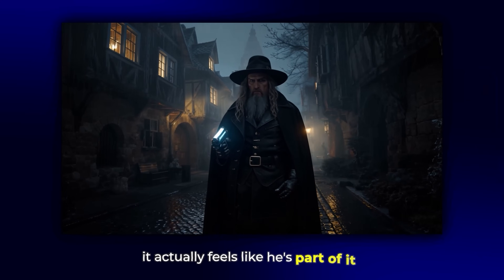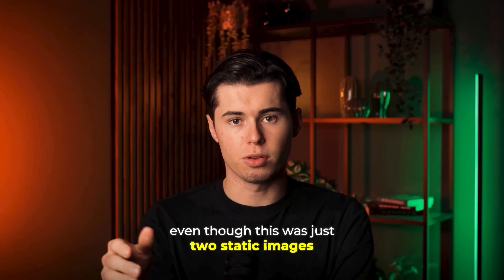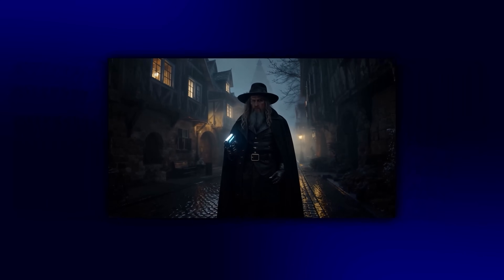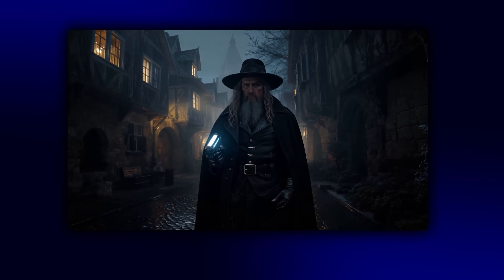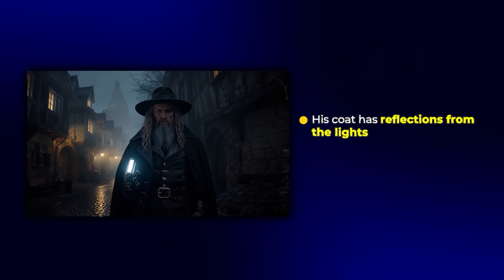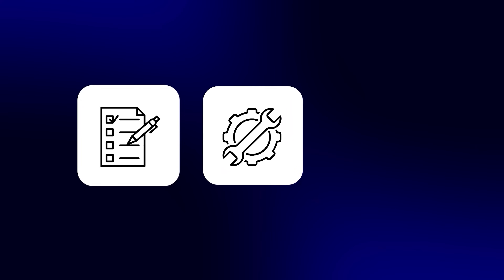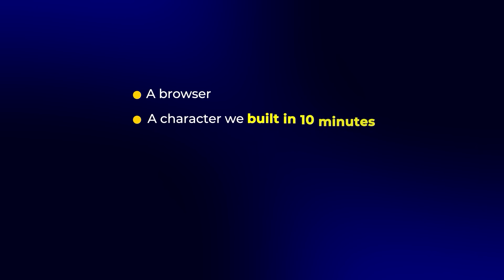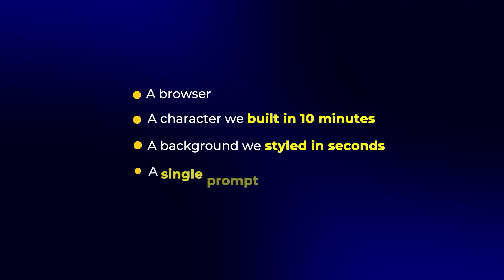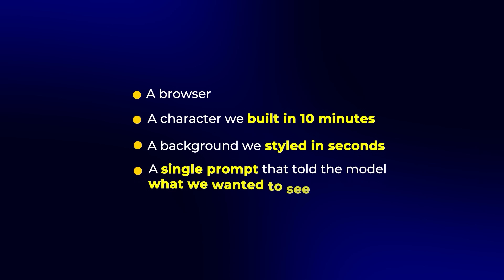Check this out — we've got Frederick in the world now, and it actually feels like he's part of it. Even though this was just two static images — the background and the character — it now moves like it's part of a real movie. Frederick isn't just slapped on top: his coat has reflections from the lights and his posture feels grounded in the space. We made this whole thing in just a few minutes using nothing but prompts and two images. And the wildest part is that this didn't take weeks of prep, gear, or even knowing how to animate. All it took was a browser, a character we built in 10 minutes, a background we styled in seconds, and a single prompt that told the model what we wanted to see.